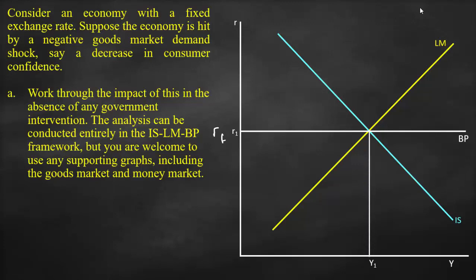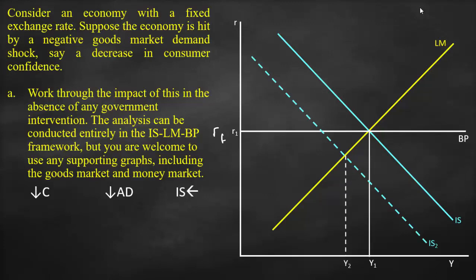The question states that we have lower consumer confidence, which results in lower consumption. If consumption decreases, it leads to lower aggregate demand. Lower aggregate demand affects the IS curve, so the IS curve shifts to the left. We shift IS to the left and get a new intersection between IS2 and the original LM curve. This gives us Y2, which is lower than Y1, and R2, which is lower than R1.